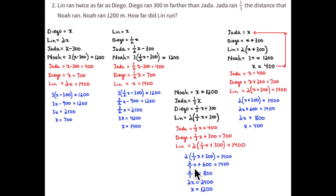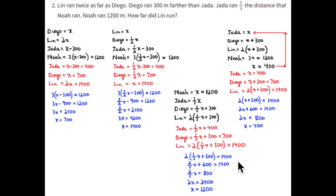Using the distributive property: two times one-third is two-thirds x, and two times 300 is 600, so two-thirds x minus 600 equals 1,400 meters. Dividing through by two gives one-third x plus 300 — Diego's run — equal to 700 meters. Subtract 300 to get one-third x equals 400. So one-third of some number equals 400, making that number 1,200 meters, which is Noah's run. Three times 400 is 1,200.